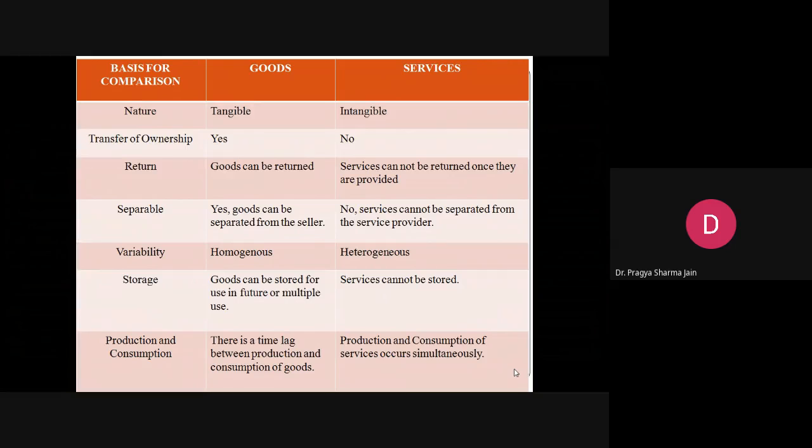Next basis of differentiation is transfer of ownership. When buying a service, the service ownership is not transferred to the end customer. For example, if you buy a ticket for an airline, then the airline is definitely not yours. But if you buy a car, then the car is yours because car is a good and ownership transfers in the case of goods.